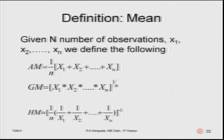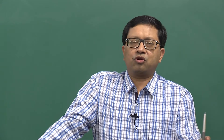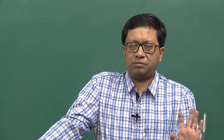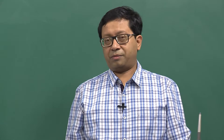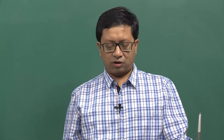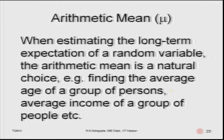Arithmetic mean is denoted by mu, which is a general variable used to denote the mean of whatever distribution. When estimating the long-term expectation of a random variable, the arithmetic mean is a natural choice — for example, finding the average age or average income of a group of persons.